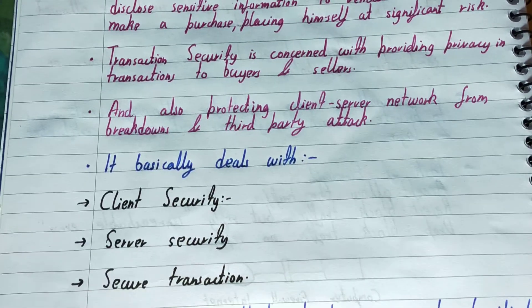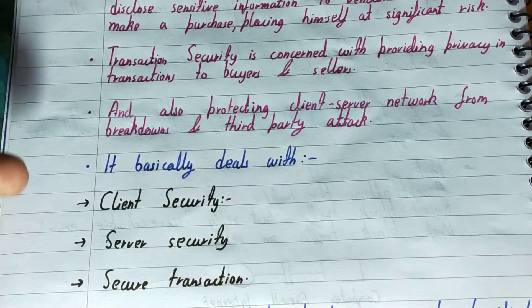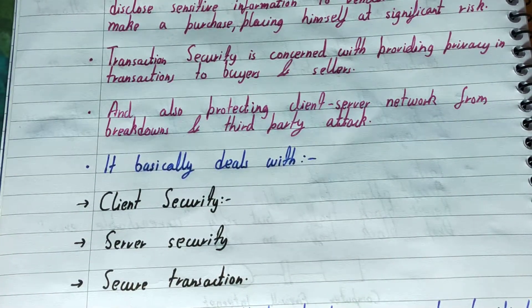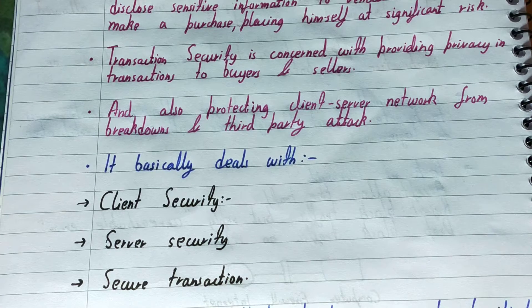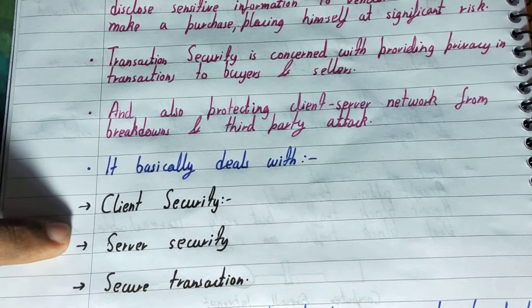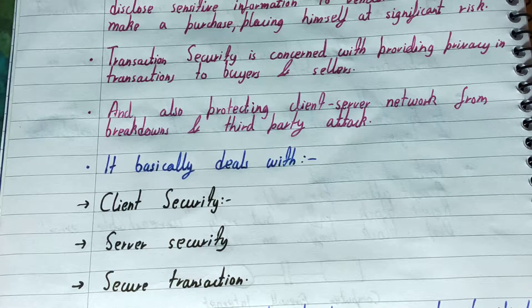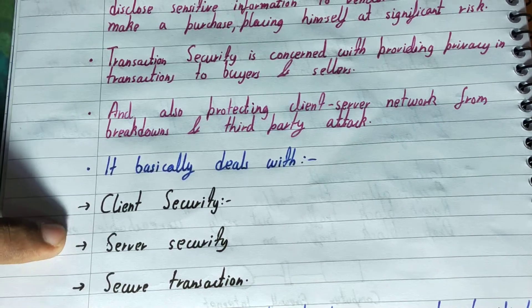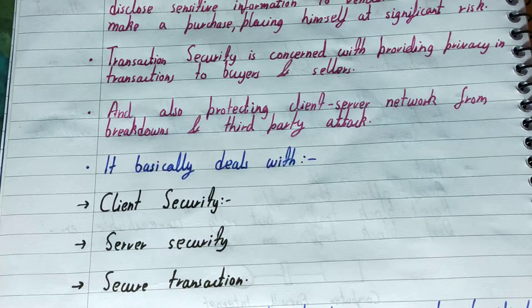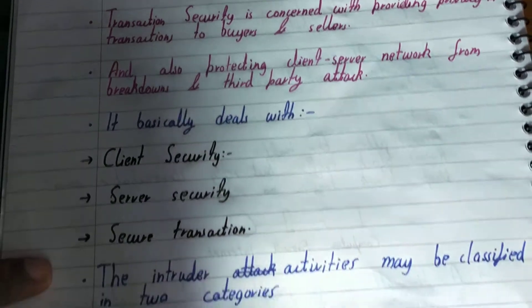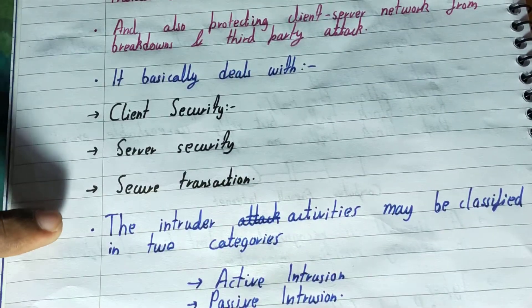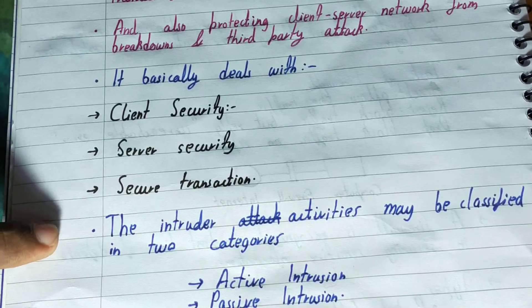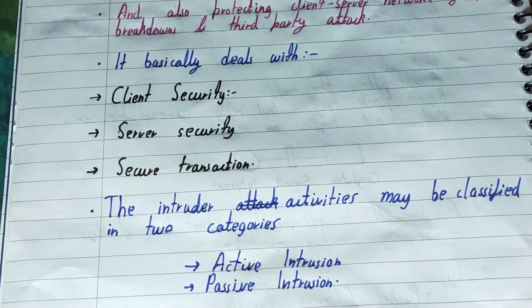Transaction security basically deals with three areas: client security — whatever data is on the client side should be kept secure; server security — whatever data is on the server also needs to be secured; and the transaction happening between the client and the server also needs to be secured.